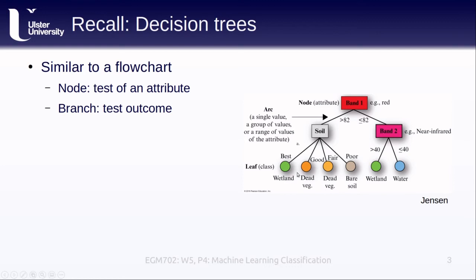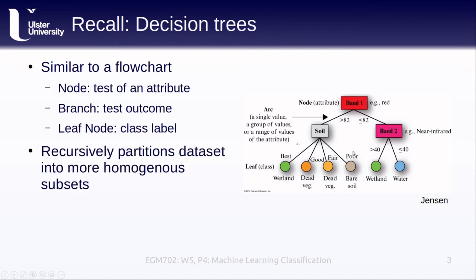The branches of our decision tree are the particular test outcomes that we have. For the band 1 example here, one branch is where the pixel value is bright or above 82, and one where the value is dark, less than or equal to 82. Leaf nodes are the final nodes where we have our class labels — here we have wetlands, dead vegetation, bare soil, and water. Another way to think about this is that we are recursively partitioning our dataset into more and more homogenous subsets of that data.